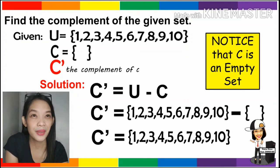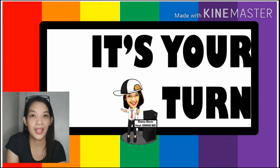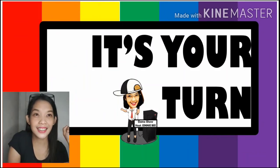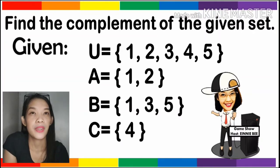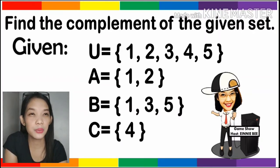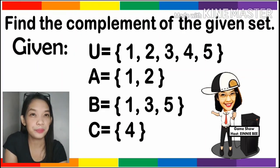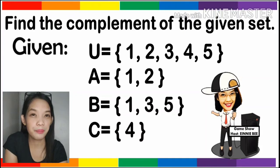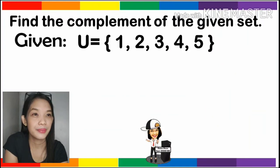It's easy, right? You can pause the video and answer this. Find the complement of the given set. From the given set, we have the universal set 1, 2, 3, 4, and 5. Set A has the elements 1 and 2. Set B has the elements 1, 3, and 5. And set C has the element 4.